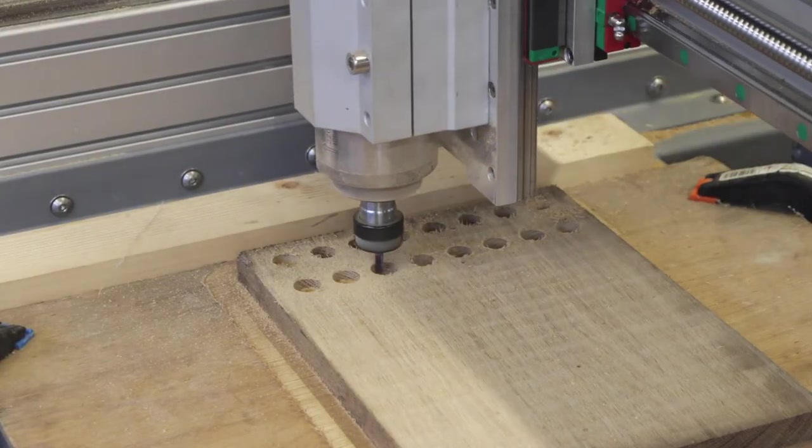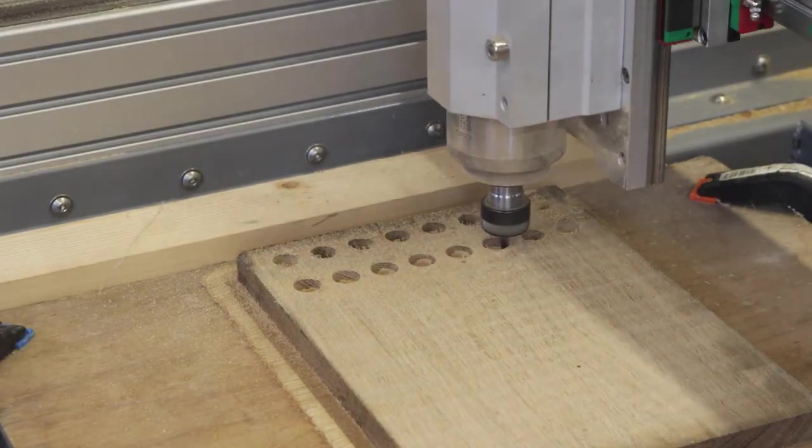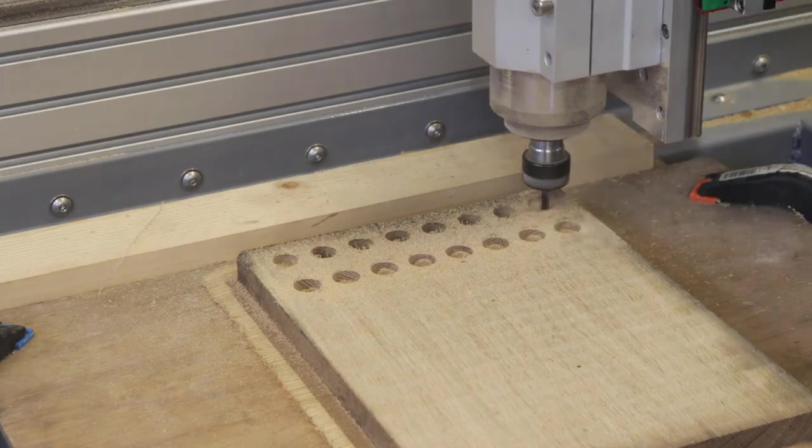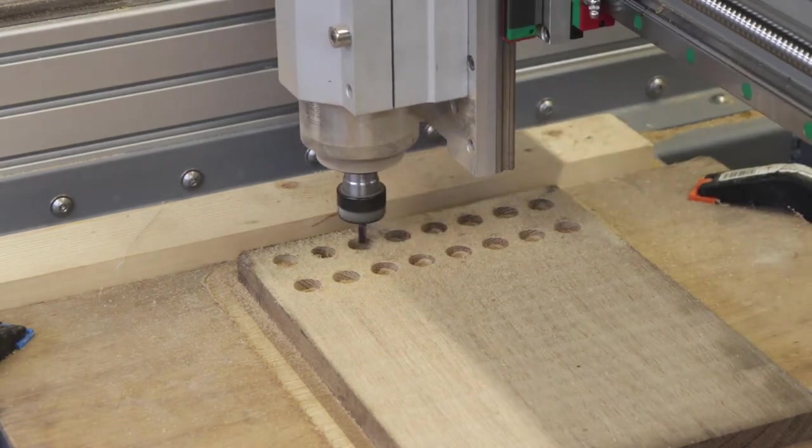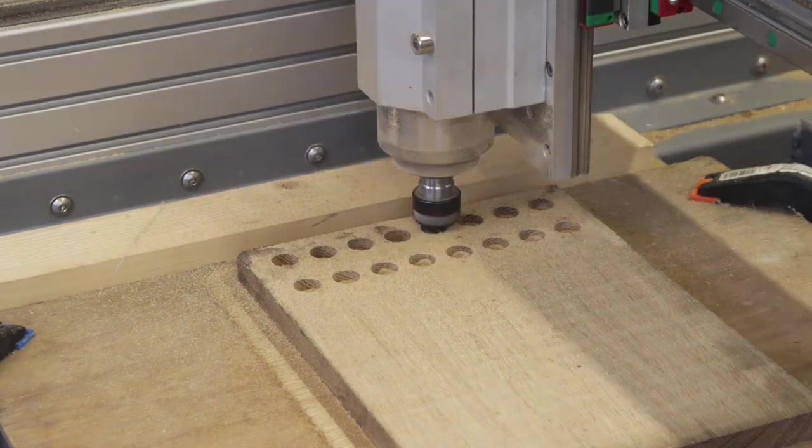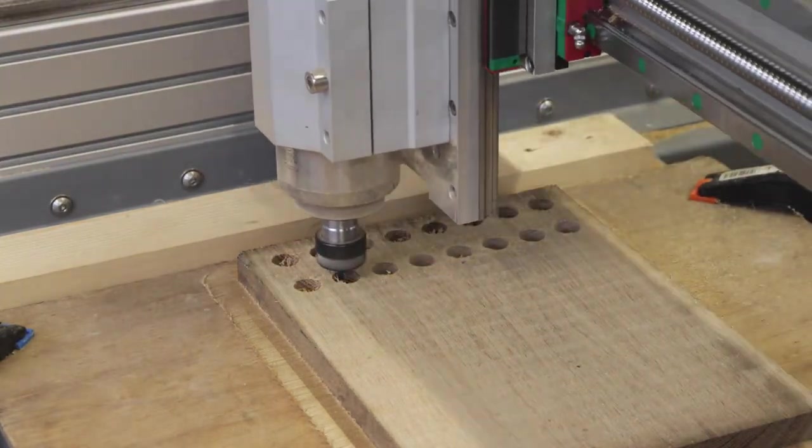The holes for the collets are made in two steps. The first step is a roughing pass using a 2D adaptive. Then I used a bore to clean up the edges and get the desired diameter.